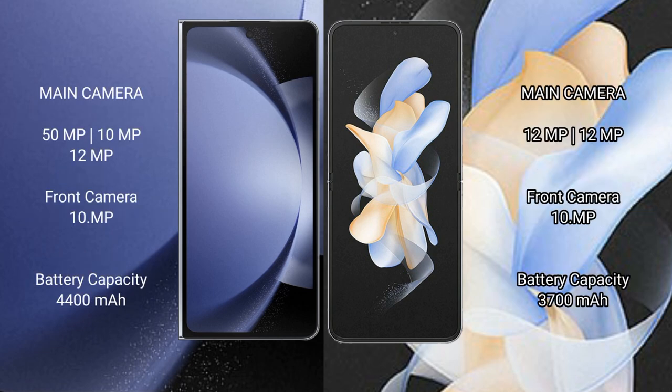The Samsung Galaxy Z Fold 6 features a triple rear camera setup with a 50MP main camera, 12MP ultrawide, and 10MP telephoto lens, plus a 10MP front camera. The Samsung Galaxy Z Flip 4 features a dual rear camera setup with a 12MP main camera and 12MP ultrawide, plus a 10MP front camera.